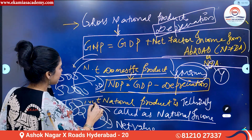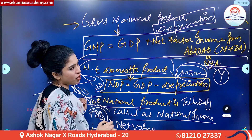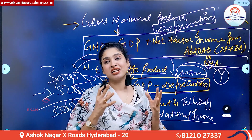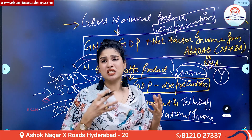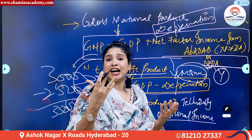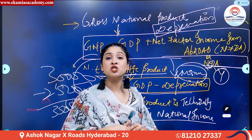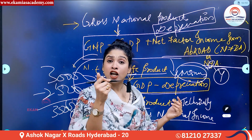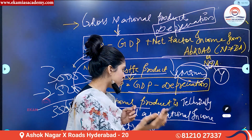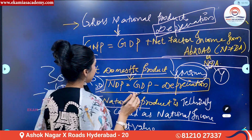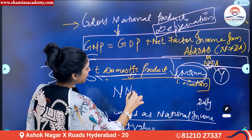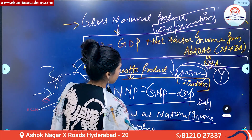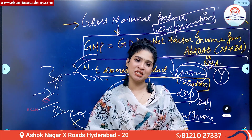The last indicator is net national product, or NNP. NNP is technically called national income — it is the total final value of all goods and services produced by a country for a period of one year. The formula is: NNP = GNP minus depreciation. This is how you calculate NNP in simple terms.